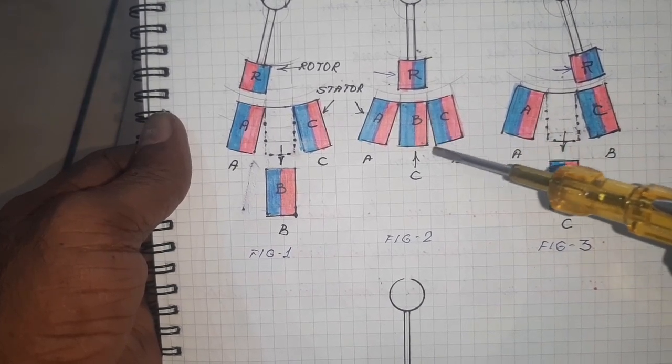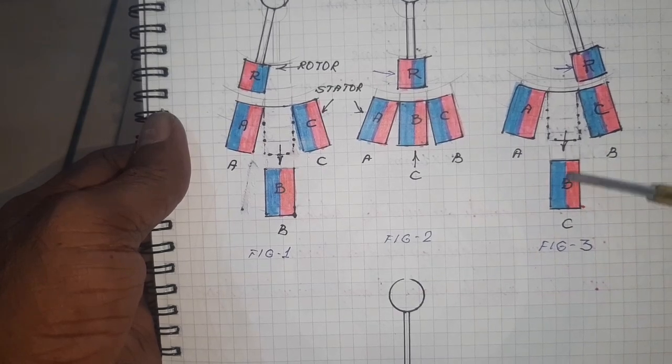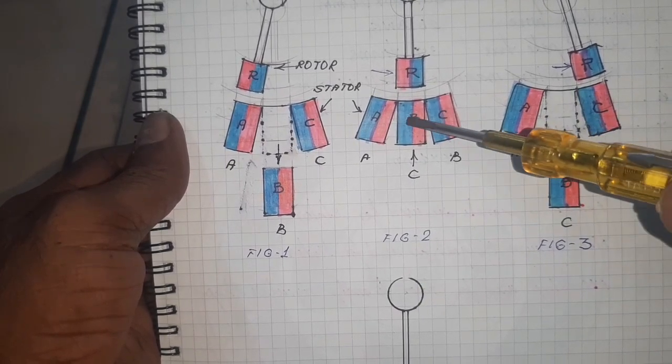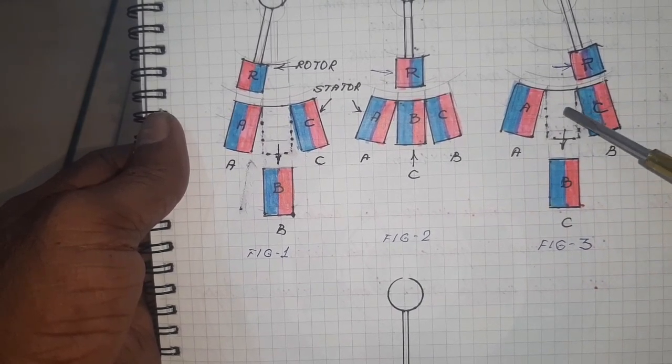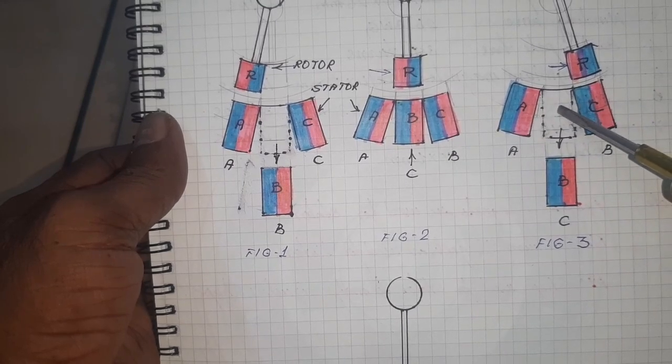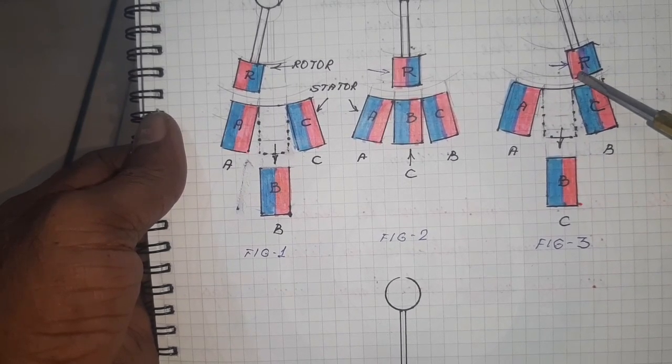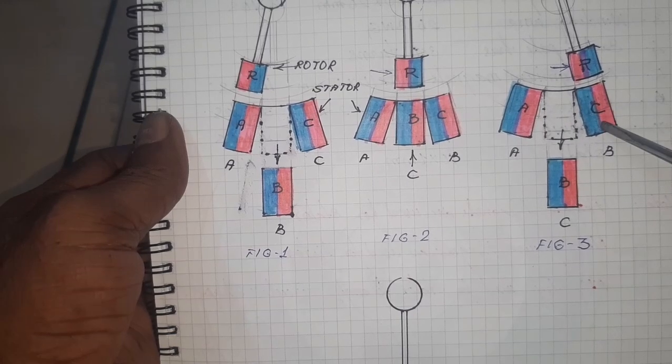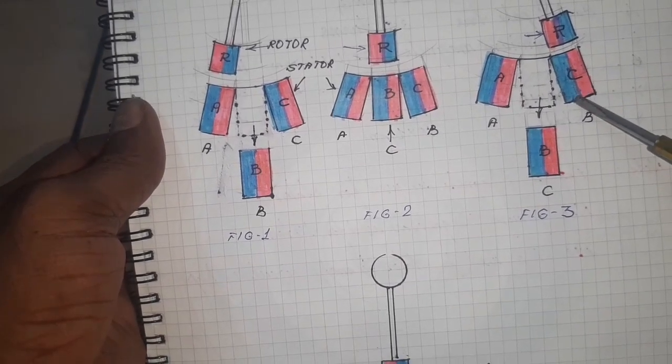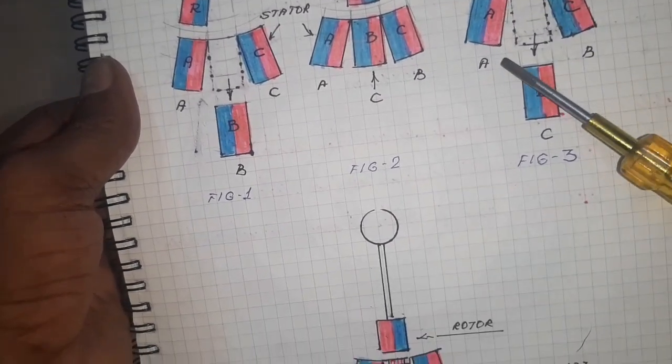Suddenly I have removed the B magnet. What happens due to the moment of inertia? The neutral axis shifted here to here so the rotor magnets move to the C magnet. This is the principle of the BLDC motor.